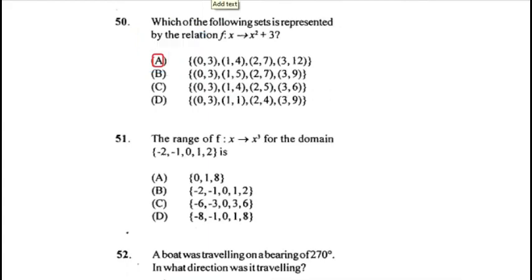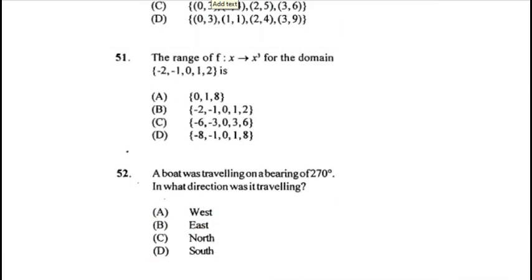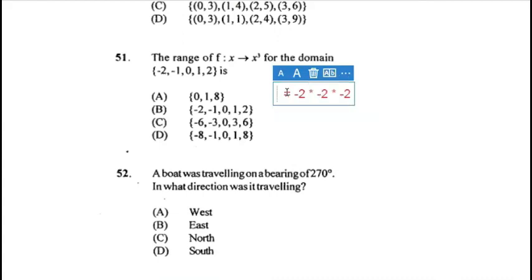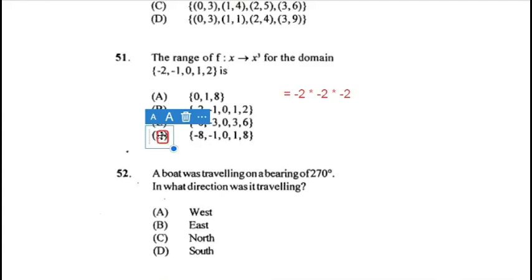Question 51: the range of f(x) = x³ for the given domain. We cube each domain value: (−2)³ = −8; (−1)³ = −1. Right away we can see that answer A is correct, as it contains negative values matching our calculations and has only three elements, while our result has five elements confirming A.